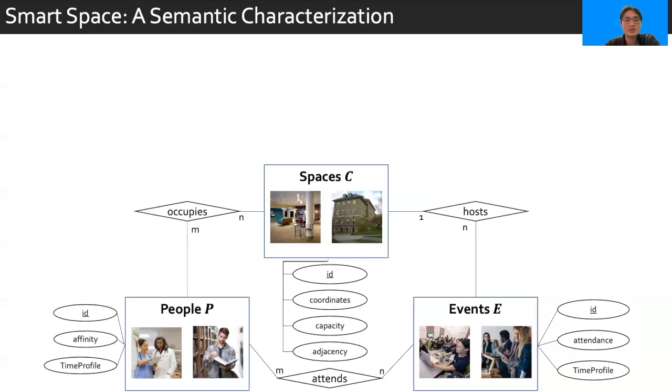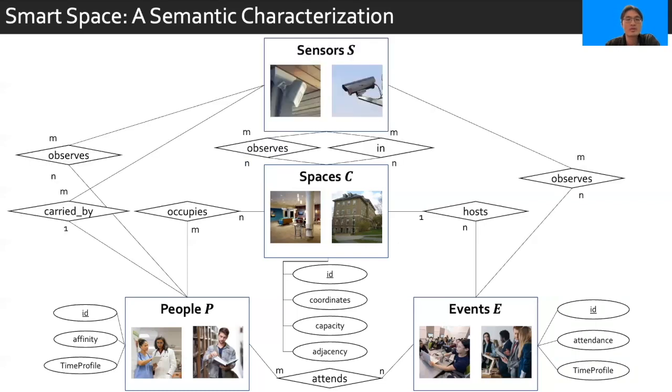All of these entities are observed by sensors that are either in the space or carried around by people. We characterize sensors by their coverage range and their sensing interval.